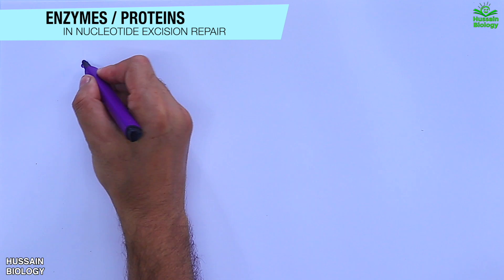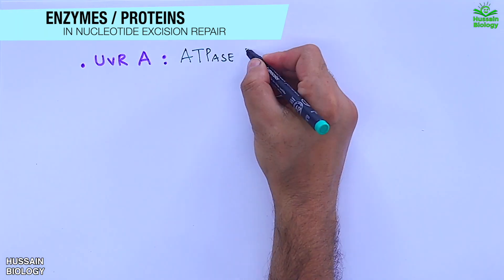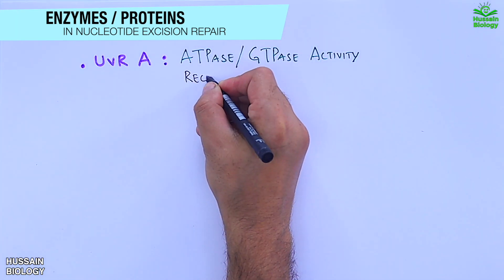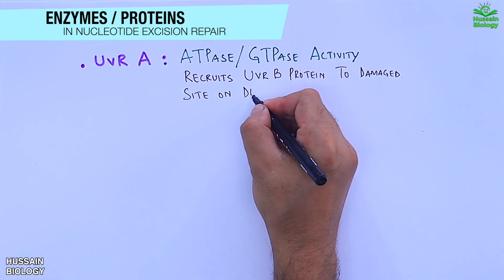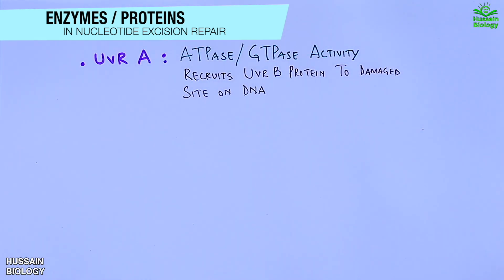First we have UVR A which shows ATPase GTPase activity and recruits the UVR B protein to the DNA. This UVR A has great affinity for the damaged site within the DNA.